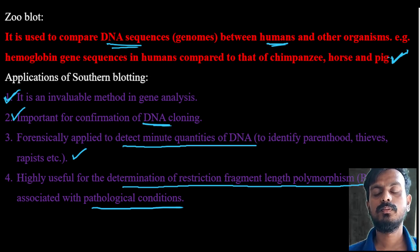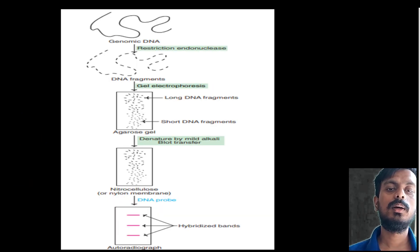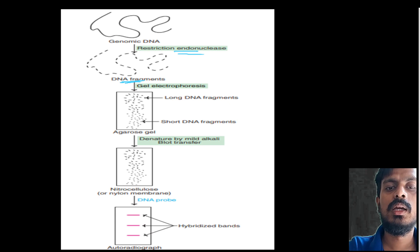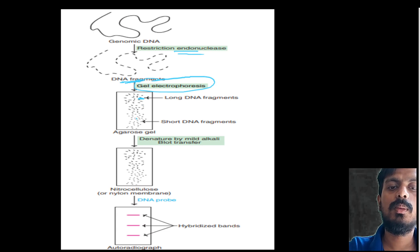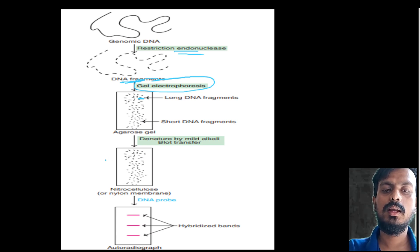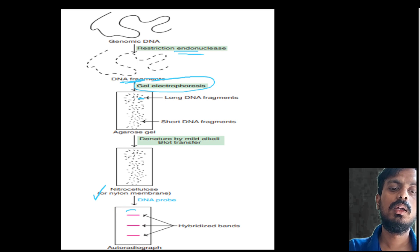Graphically, southern blotting proceeds: genomic DNA undergoes restriction endonuclease treatment to produce DNA fragments. These fragments undergo gel electrophoresis — long DNA stays near the top, short fragments migrate further. The gel is then transferred to a nylon or nitrocellulose membrane. Using a specific hybridization probe, the DNA sample can be detected based on molecular weight.